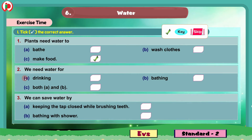Question 2: We need water for dash. The options are A. Drinking, B. Bathing, C. Both A and B. The correct answer is option C, both A and B — drinking and bathing. We will put the tick mark here for option C. We need water for both drinking and bathing.